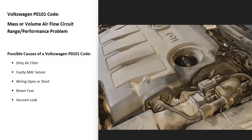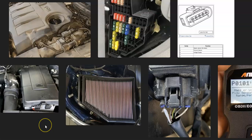Another thing that could cause this problem is a vacuum leak. This basically means one of the hoses going into the intake or similar is leaking. When you have a vacuum leak, it can throw the mass sensor off and it won't work correctly. So if you've checked everything else and it all looks good, go check for a vacuum leak. That's basically a full overview of how you go about fixing a Volkswagen with the P0101 code.